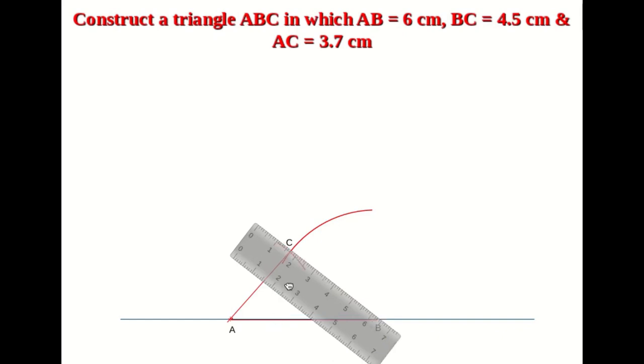AB is equal to 6 centimeters, BC is equal to 4.5 centimeters, and AC is equal to 3.7 centimeters.